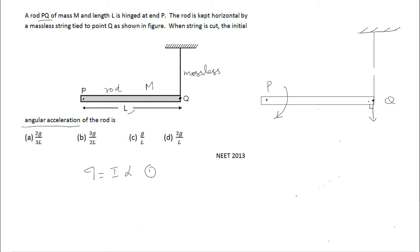Torque is force into perpendicular distance. The force available is the weight of the rod, which will act at the center — the center of mass of the rod — so Mg acts at the center. At the moment the string is cut, this distance L by 2 will be the perpendicular distance from the point of hinging to the force Mg.